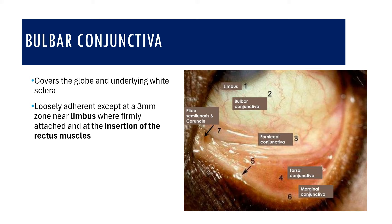The bulbar conjunctiva covers the globe over the underlying white sclera. It is loosely present except at a 3 mm zone near the limbus where it is firmly attached. Additionally, wherever the recti muscles insert, the bulbar conjunctiva is also very strongly adhered. So there are two locations where the bulbar conjunctiva is tightly adhered: the limbus and the insertion of the rectus muscles.